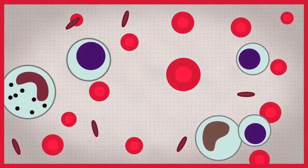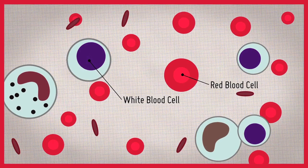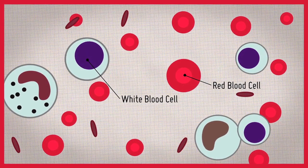Blood contains many different types of cells, such as red blood cells and white blood cells, each having specific functions.